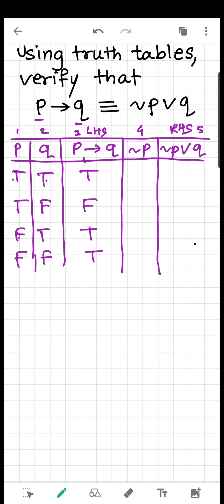Now P is true, true, false, false. So what will not P be? When true, then false. When false, then true. When true, then false. Again when false, then true. And for this false we will have true.